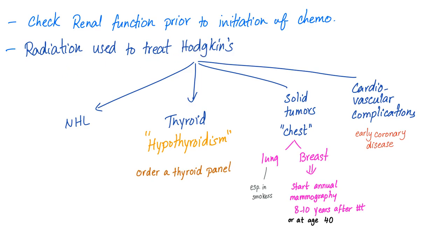Radiation used to treat Hodgkin's can unfortunately lead to complications, including non-Hodgkin's lymphoma, thyroid problems — this is very high yield — specifically hypothyroidism, so you should order a thyroid panel if you suspect anything. Solid tumors in the chest such as lung cancer especially in smokers, and breast cancer. You should start mammography 8 to 10 years after initiating treatment for Hodgkin's disease or starting at age 40, whichever is earlier. Cardiovascular complications such as early coronary disease can also occur.